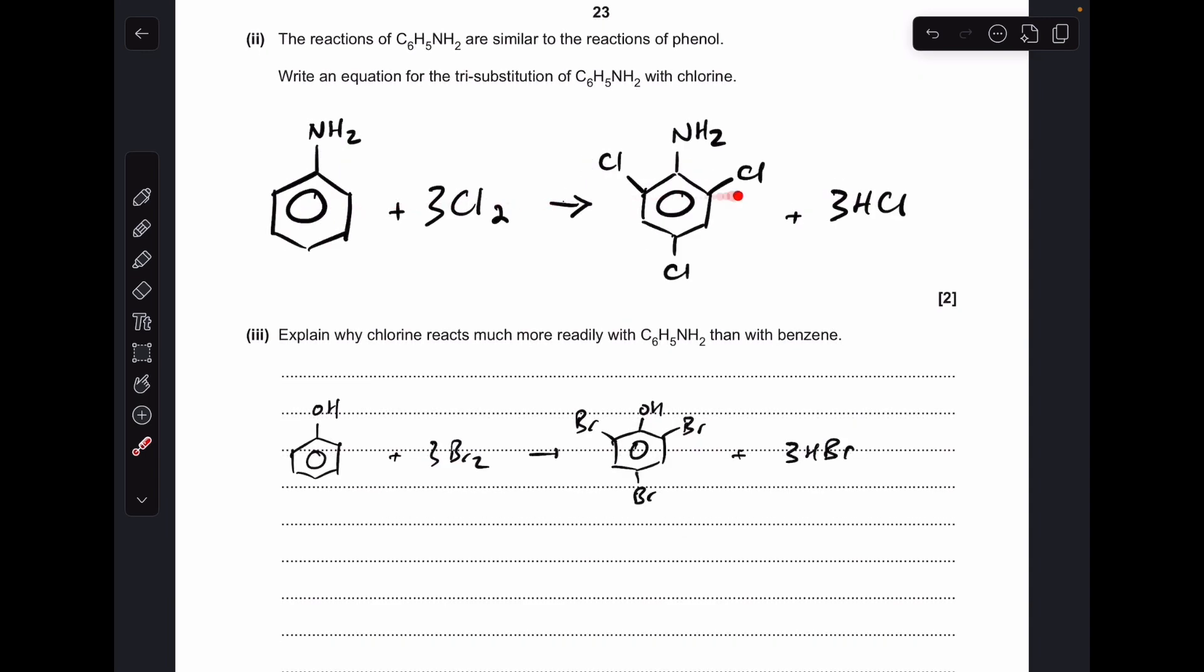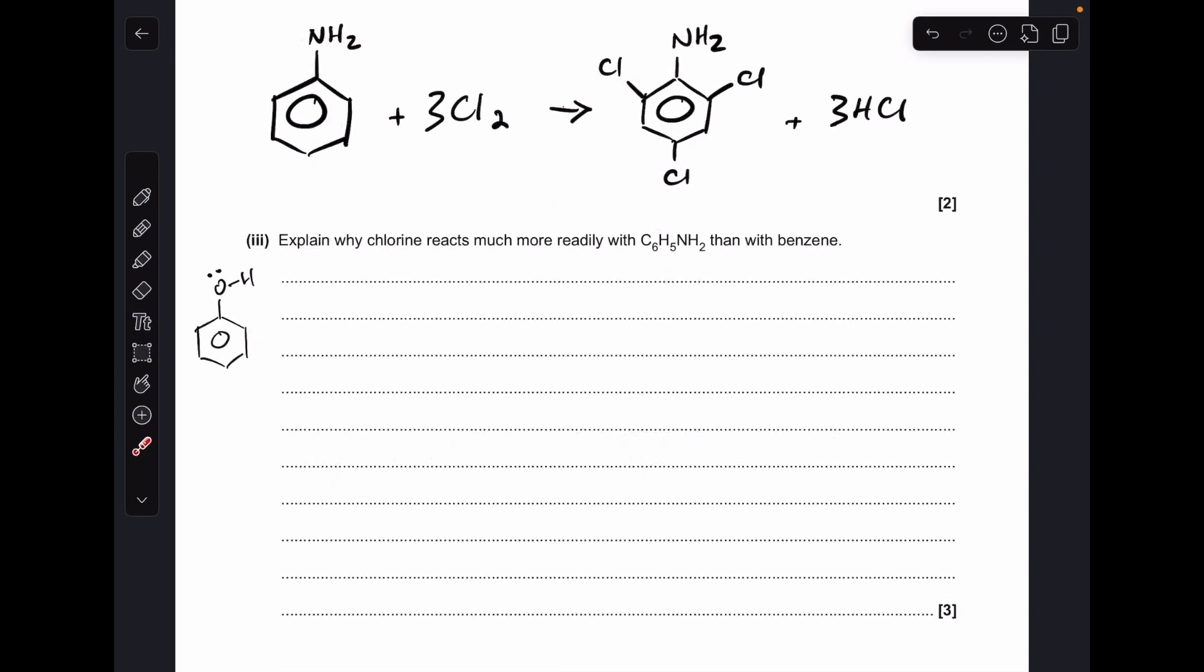So there's the equation for that. For the last part, we're going to explain why chlorine reacts more readily with phenylamine than with benzene. You'll notice I've drawn up a phenol molecule there just as a little reminder: there's a lone pair on that oxygen and it becomes delocalized into the pi electron system of the benzene ring. In phenylamine, you've got a nitrogen there and there's a lone pair of electrons on there, just like on the O of phenol.